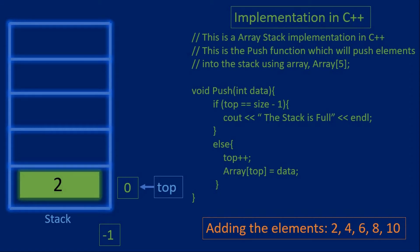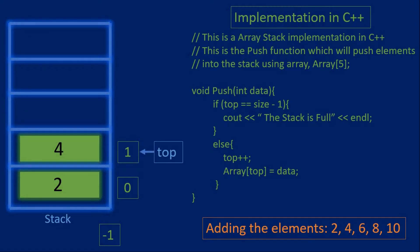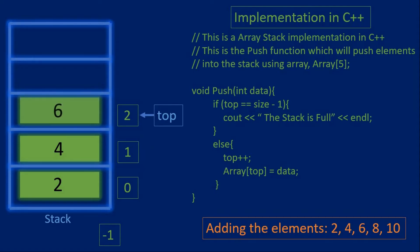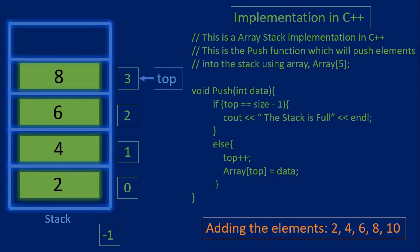When we add the element four, we increment top by one to equal one and add element four at index one. We can add six — the stack is still not full — so we increment top and add element six at index two. Since the stack is not full we add element eight at index three, and then we add element ten at index four.